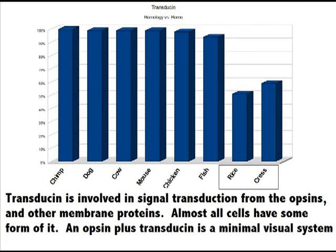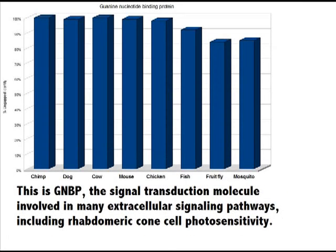This gene must be a very early component of the signaling from opsin activation. Here is Guanine Nucleotide Binding Protein, GNBP, also a signaling component of the simplest visual system, and we find it in vertebrate rods and cones, as well as in chickens and fruit flies, minimally changed. Note that genetic change corresponds to evolutionary distance as based on morphology and fossil evidence.